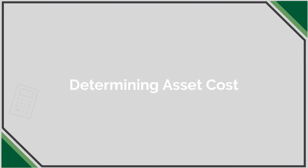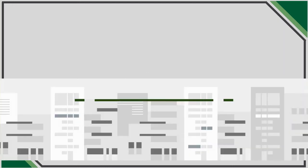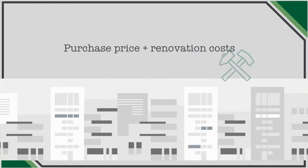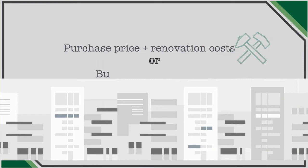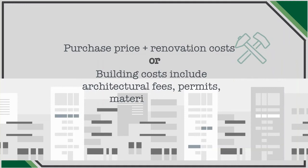In talking about different types of assets, we need to understand what is actually embedded in the value of those assets. Building value includes the purchase price plus any renovation costs incurred to get that building ready for use. If a company builds the building, it includes all costs: architectural fees, permits, materials, and labor. Fair value is never included in figuring out what a building cost is.